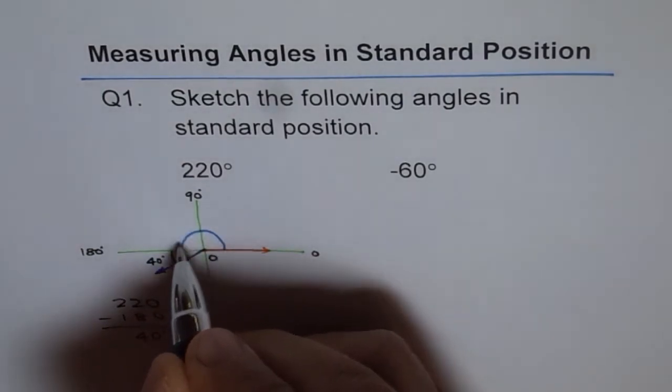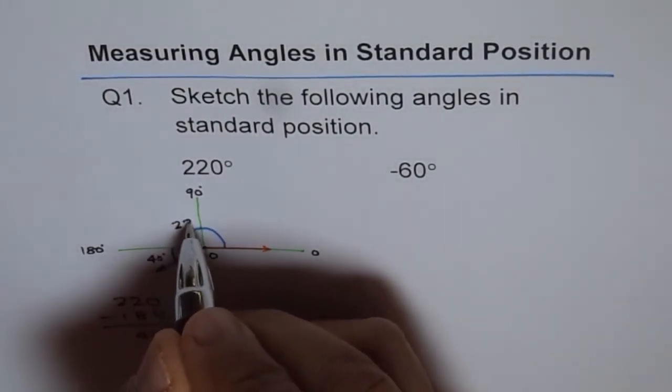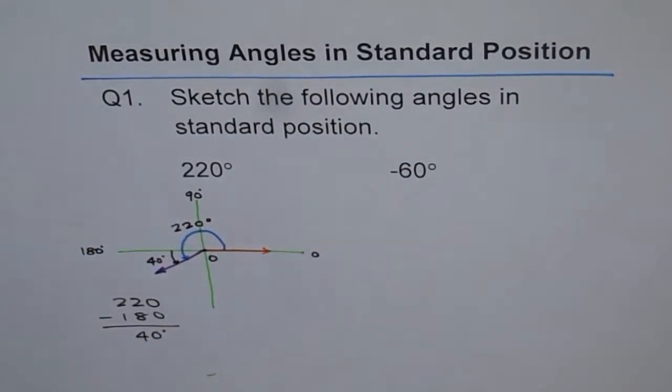So we are sure that this blue circle arc which we have made is 220 degrees. So that is how we are going to sketch our angles in standard position.